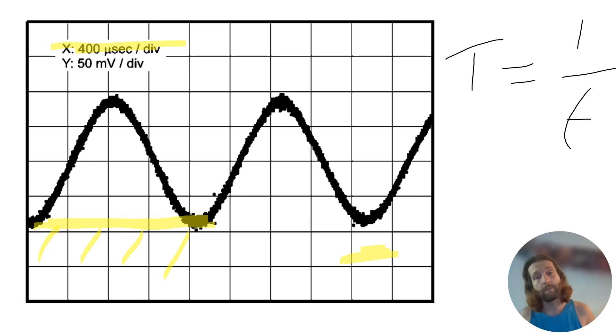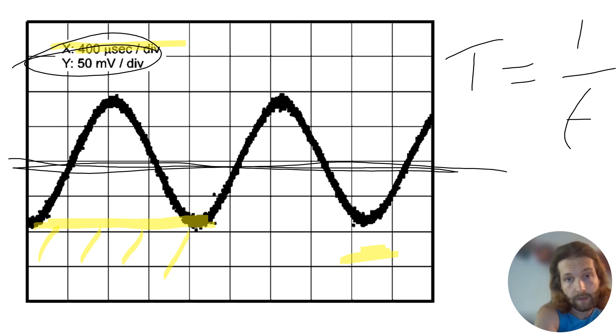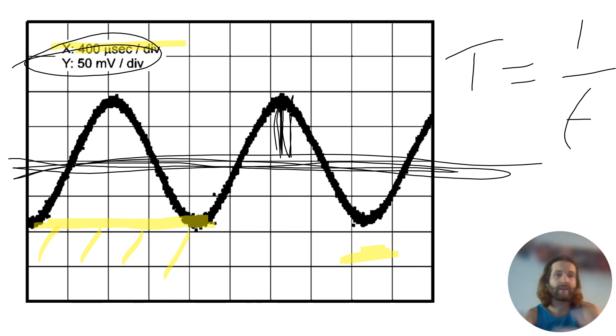And the vertical axis typically represents voltage. As we can see here, each division is 50 millivolts. So I can go from the rest point, look up, it's about two. Just kind of eyeballing and spitballing this. So I can see that this has an amplitude of 100 millivolts in terms of how much it's oscillating there in the y.